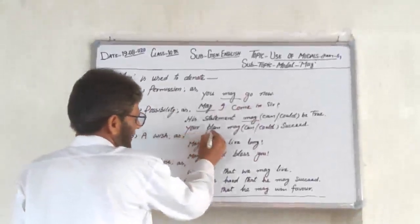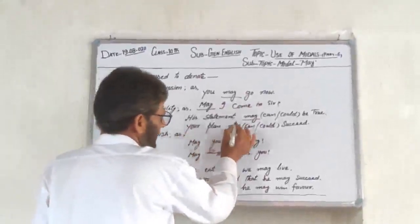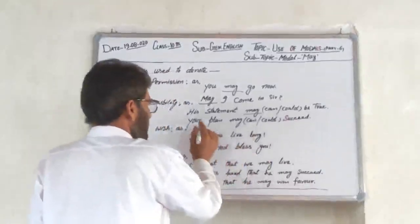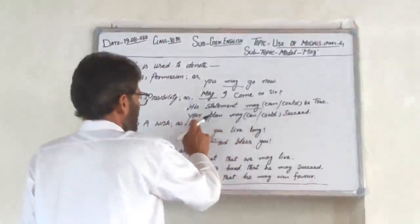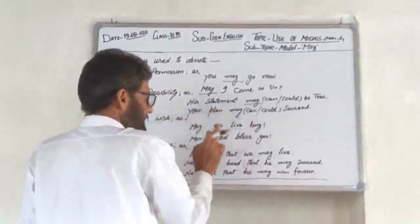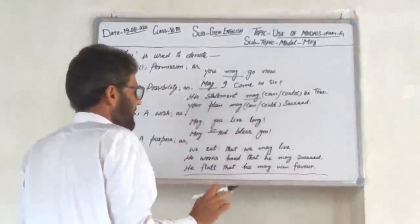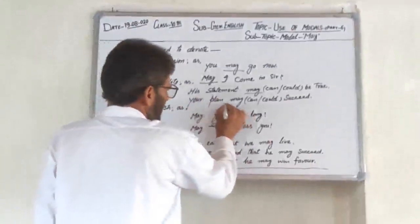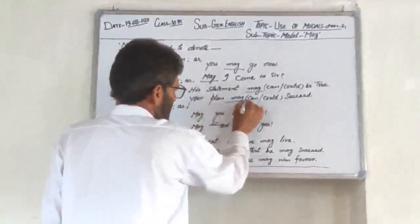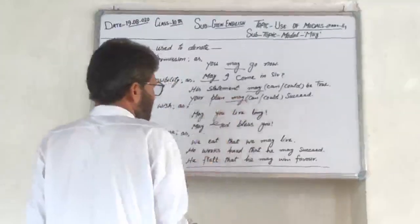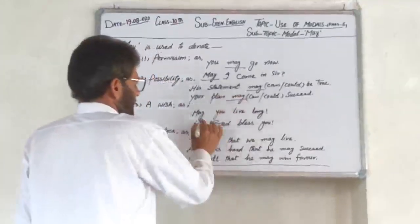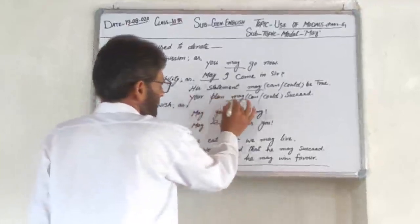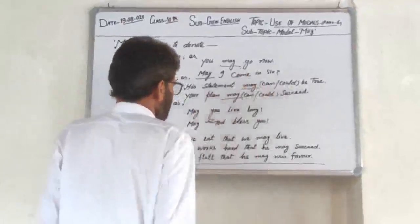دوسری مثال: 'Your plan may succeed.' یہاں پے بھی Possibility کا اشارہ ہے اور ہم نے یہاں Modal May کا استعمال کیا — 'Your plan may succeed.'